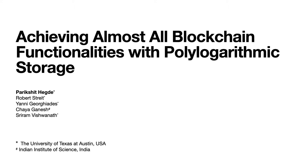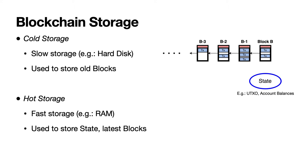There are two keywords in our paper title: blockchain functionalities and storage. Starting with storage — blocks that are old aren't accessed often, and even when they are accessed it is not critical that they're read fast. Therefore old blocks can be stored in slow storage devices such as hard disks; we'll call such storage cold storage. Several blockchains today use a summary of the blockchain called the state to speed up transaction validation. Examples of the state include UTXO and account balances of all users. It is critical that the state is accessed quickly, so it is stored in fast storage devices such as RAM — we'll call such storage hot storage.